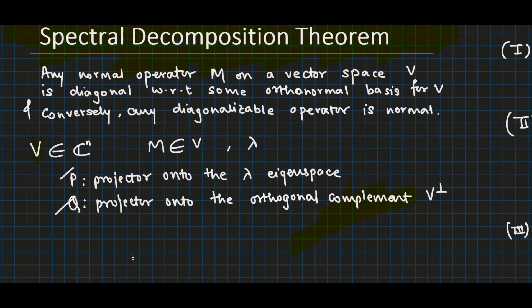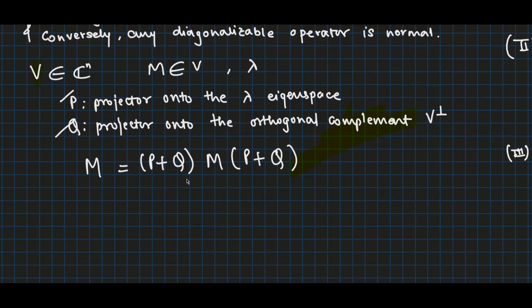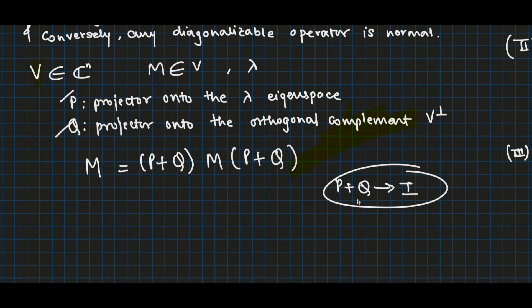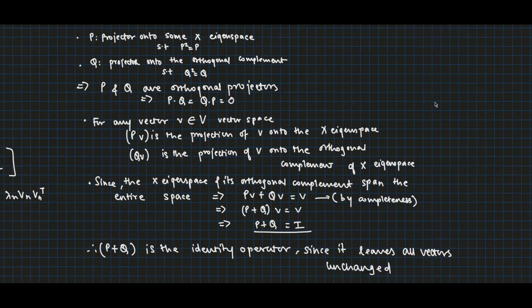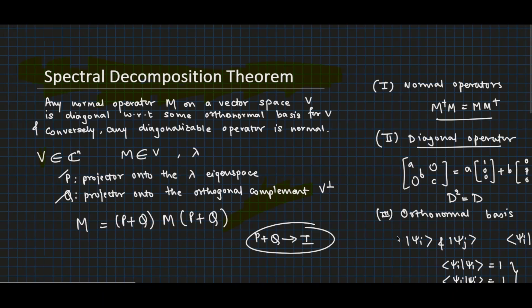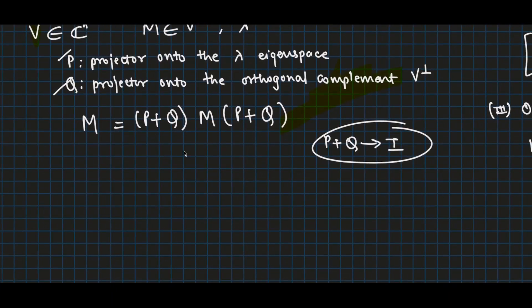After defining these two projector operators, we can write M, a normal operator on V, as (P+Q) M (P+Q), since P+Q is nothing but our identity operator. There are many ways to prove that P+Q equals the identity operator; one proof is shown on screen. By expansion, M can be written as PMP plus PMQ plus QMP plus QMQ.